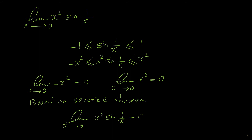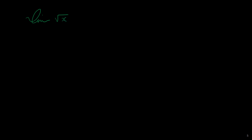Because both the left and right limits equal 0, by the squeeze theorem the limit of x squared times sine of 1 over x as x approaches 0 is also 0. Let me show you another example: the limit of the square root of x times cosine of pi over x plus sine of pi over x, as x approaches 0 from the right. We want to find this limit.